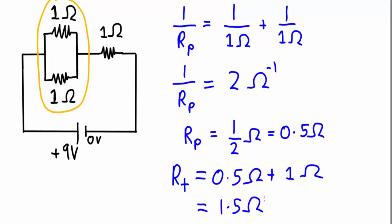If I wanted to figure out the current, what I'd need to do is then use Ohm's law. And in this case, I'd get 9 volts divided by 1.5 ohms, which gives me 6 amps. There we go. We've calculated the total resistance and the current in this circuit.